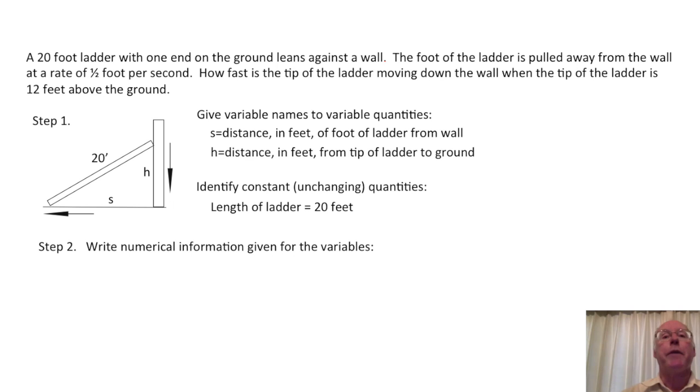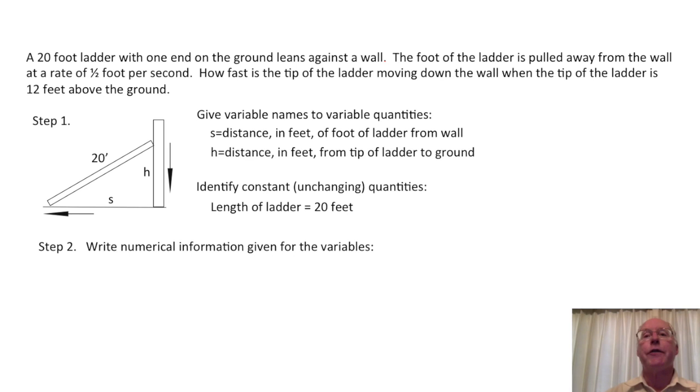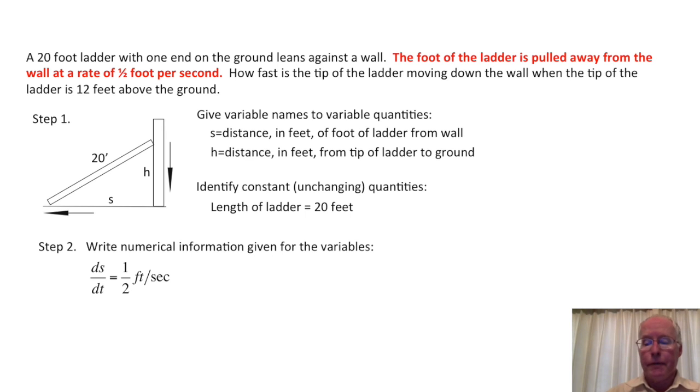Next, we read the problem again and look for important numerical information about our quantities. This is information about how fast things are changing. Look for words like rate, speed, changing, moving, words that suggest change or motion. In this problem, as seen in red, the foot of the ladder is being pulled away from the wall at a rate of one-half foot per second.